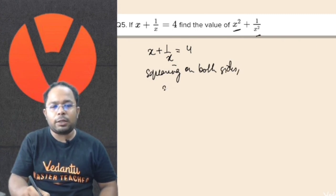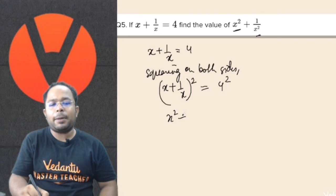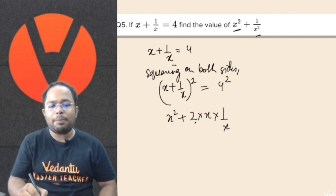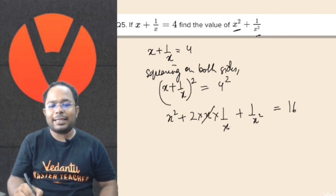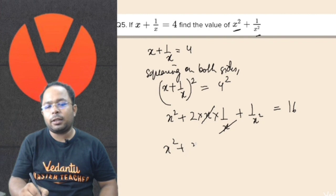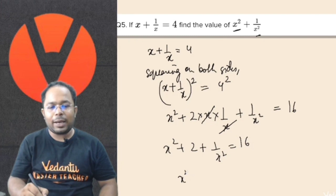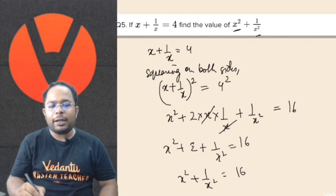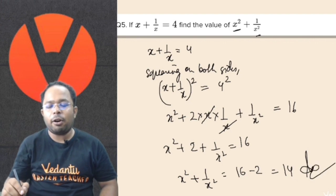As we can see, x times 1 by x cancels leaving 2. So x squared plus 2 plus 1 by x squared equals 16. Therefore x squared plus 1 by x squared equals 16 minus 2, which gives us the answer 14.